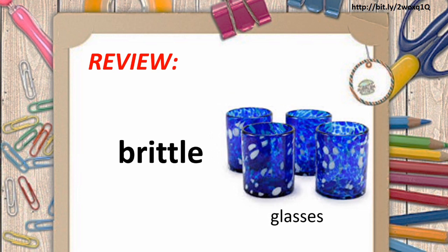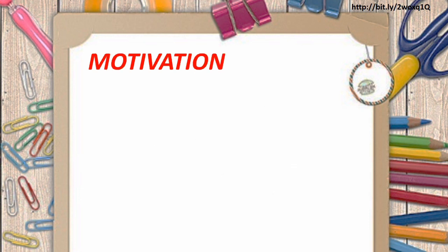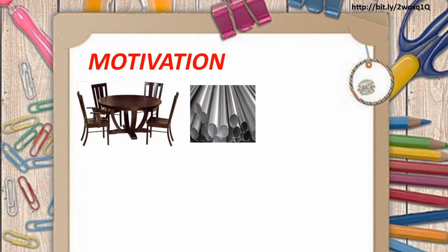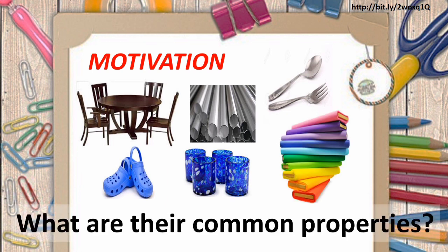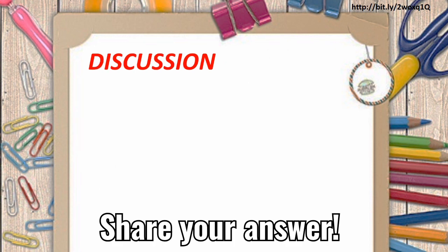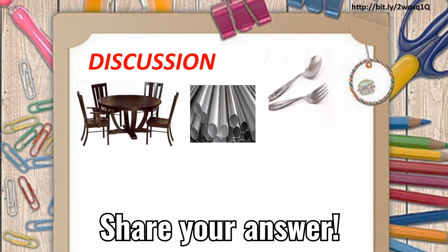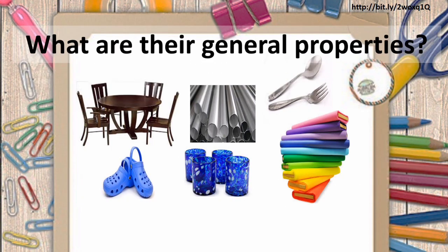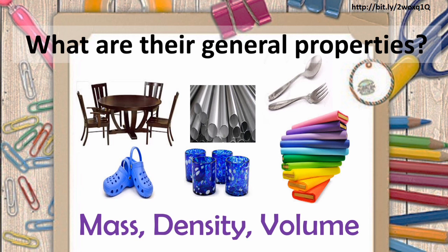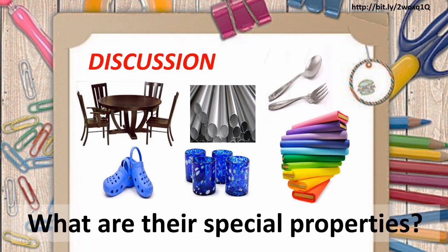There you have it for our review. Now to give you some motivation about our new topic, let us look at the pictures here. Identify how it is made up. What are their common properties? Based on the given pictures, we can say that all the materials have something in common like mass, density, and volume. Now that we know the general characteristics of all the materials, let us find out what are the special properties of each material.